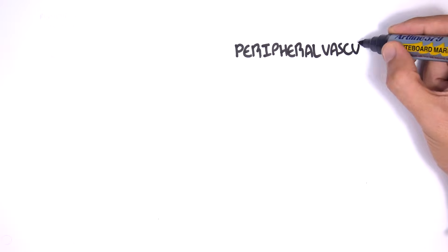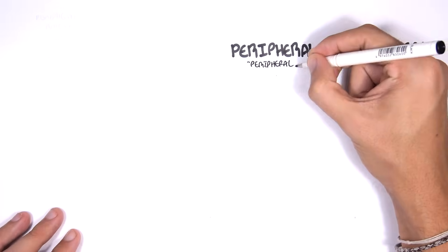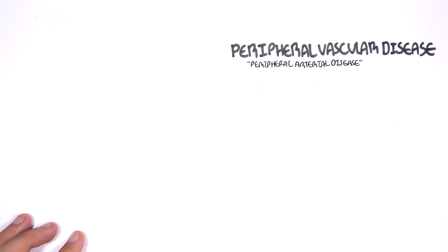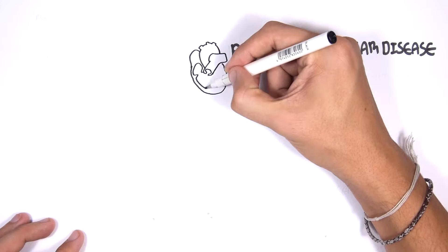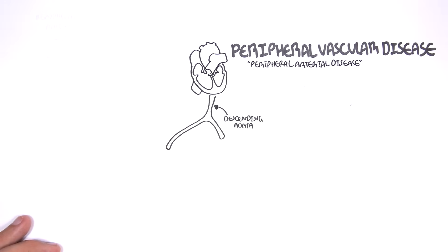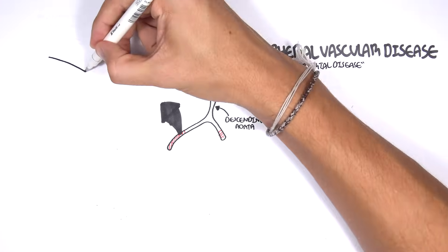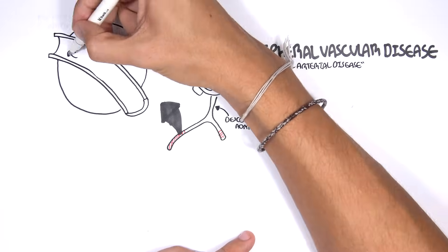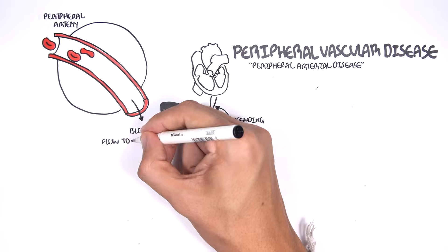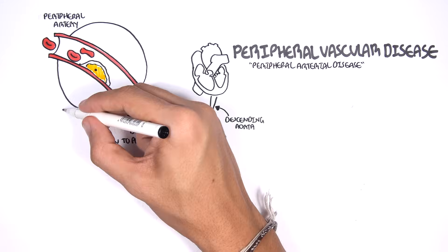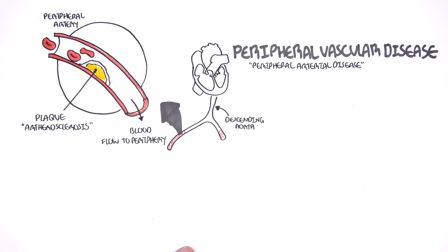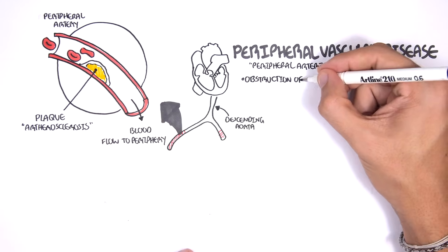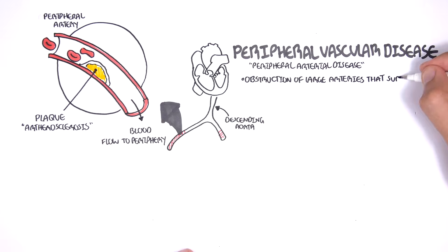Peripheral vascular disease, also known as peripheral arterial disease, is another cardiovascular disease. Here we have the heart with the descending aorta. Peripheral vascular disease is basically a result of plaque formation in the peripheral vasculature from atherosclerosis, for example — obstruction of large arteries that supply blood to the peripheries.